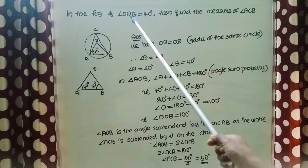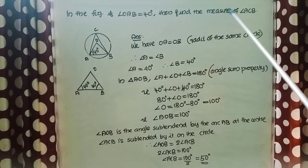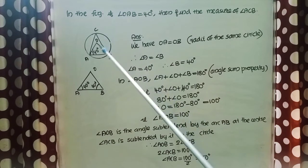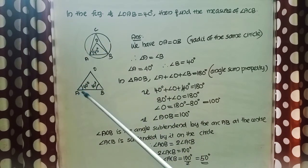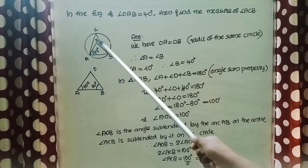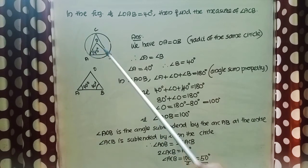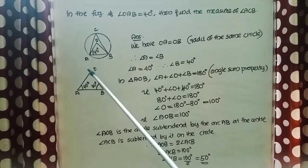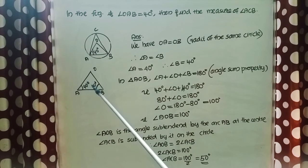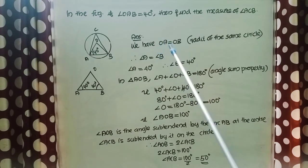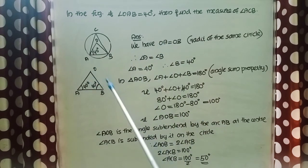In the figure, if angle OAB equals 40 degrees, find the measure of angle ACB. In triangle AOB, OA and OB are radii of the same circle, so OA equals OB. Since two sides are equal, the angles opposite to them are also equal. Angle A is 40 degrees, so angle B is also 40 degrees, because angles opposite to equal sides are equal.